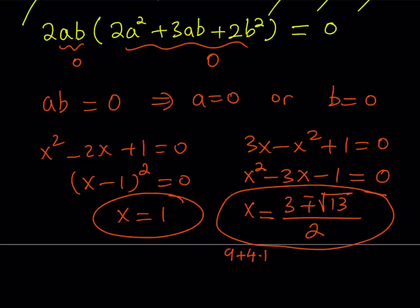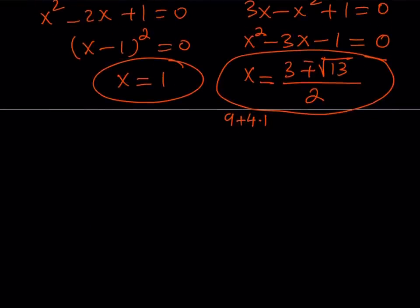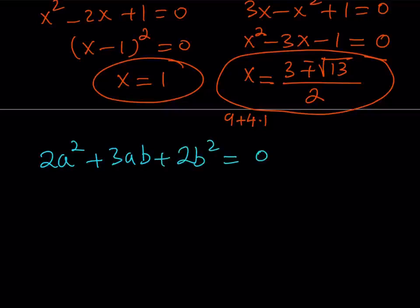All these solutions are real and valid — you could check them, though that would take a while. Now we deal with the second factor: 2a² + 3ab + 2b² = 0. I won't substitute back for a and b yet; instead, since this is homogeneous, I'll let a = kb.